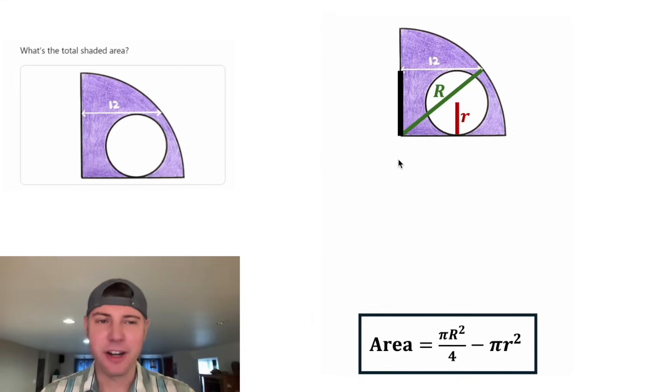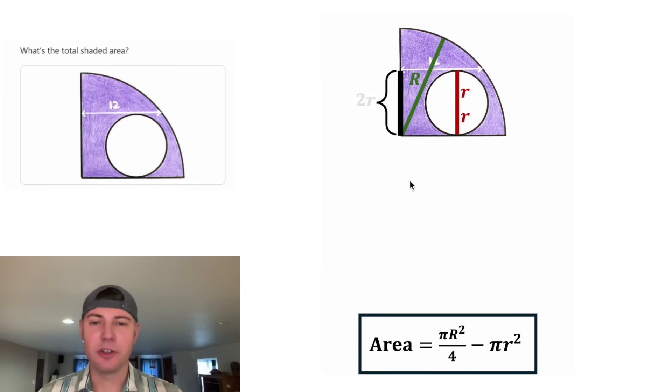Next, let's look at this distance right here. This is the third side of a nice looking right triangle. So let's figure out this length. Well, this is the same distance as the diameter of our white circle. So if we draw one more radius, we can see this distance is 2r.